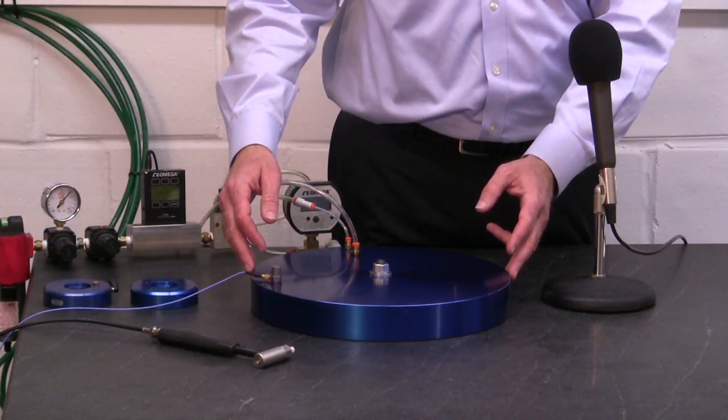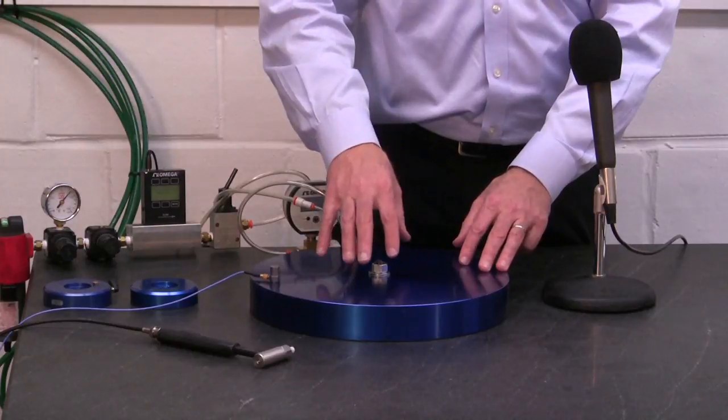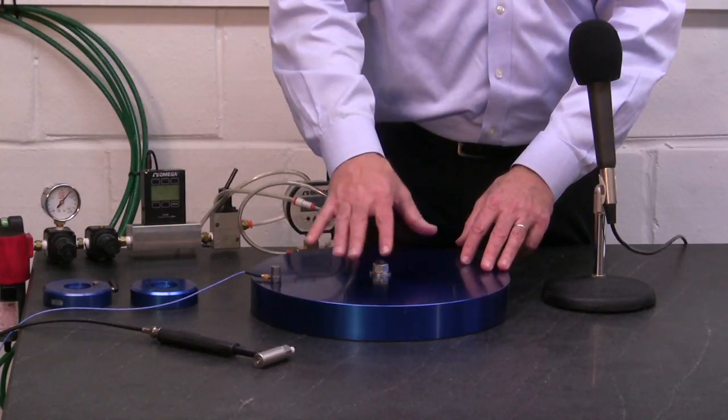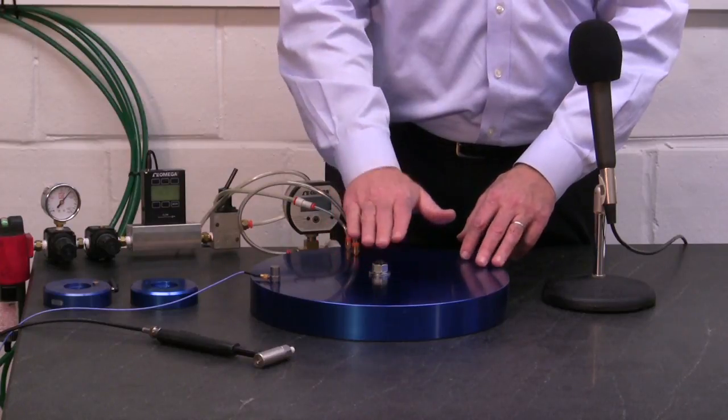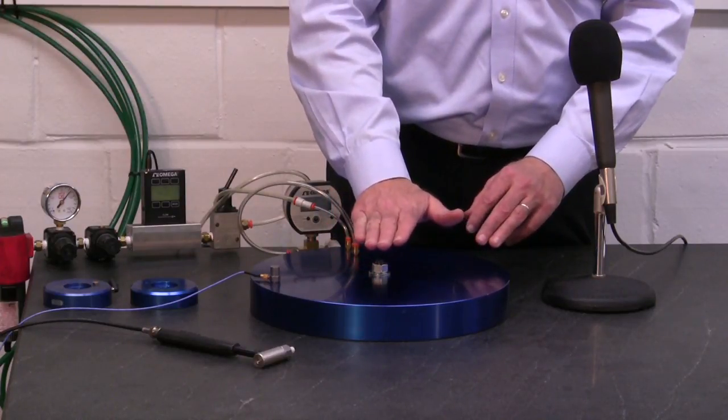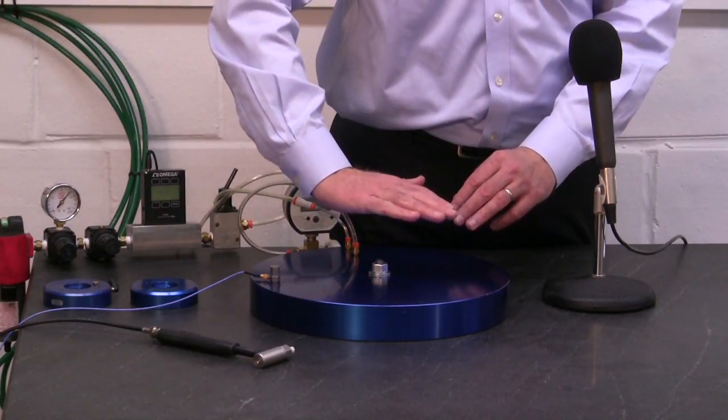With 60 psi input pressure to the bearing and no vacuum force, the bearing is floating on a relatively unstiff air film. There was an axial mode at 36 hertz and a tilt mode shape at 50 hertz.